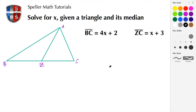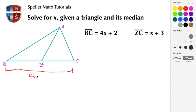Let's begin. Here we have a triangle labeled ABC. It has a median AZ, and we have some given information. The segment BC has an expression of 4x plus 2, and then we have ZC with the expression X plus 3.